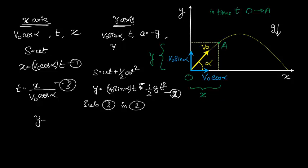We get Y equals V0 sin alpha into T which is X divided by V0 cos alpha minus half G and T square, so I get X squared divided by V0 cos alpha whole squared. Cancel this.